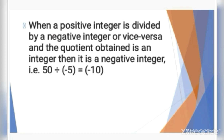Let's discuss some important points for the division of integers. When a positive integer is divided by a negative integer, or a negative integer is divided by a positive integer, and the quotient is an integer, then it is a negative integer. That means if any one number in the division is negative, the answer will be negative. For example, 50 divided by minus 5 gives minus 10, because minus 5 is negative.